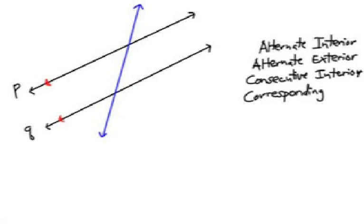Alright, next: consecutive interior angles. If I put a small circle next to the consecutive interior angles, where are they? If I look at that interior angle there, the consecutive interior partner would be there. What do you know about them? They are supplementary.